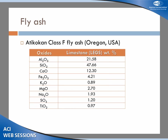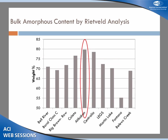The fly ash I'll show results for is called Atacocan fly ash — it's a Class F from Oregon. It has 12% calcium oxide, so almost as much calcium as a Class C fly ash, but it's still classified as Class F. For the ten fly ashes I'm working on, that's a moderate level — two have around 20% and a few are really low calcium. I've done Rietveld analysis on all of them, but to show the bulk amorphous content for all ten fly ashes: the Atacocan, circled in the middle, has the highest bulk amorphous content. All of them are in the range of 70% to 80%, with the exception of the Fontana, which was pretty low.